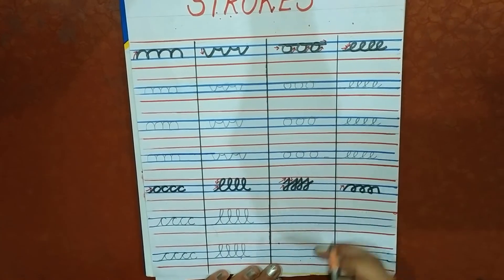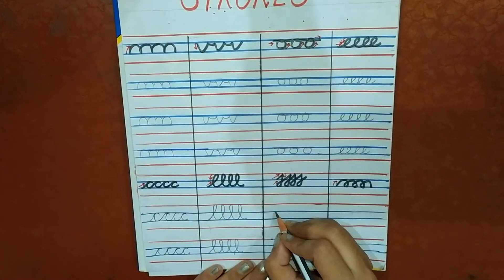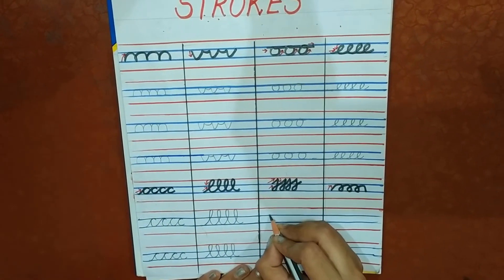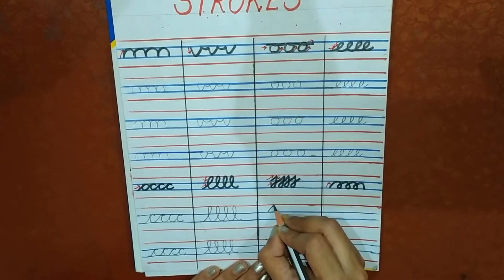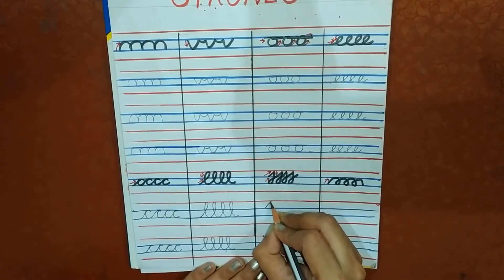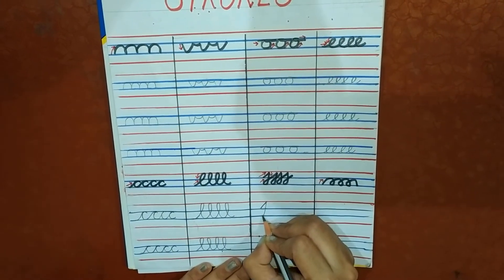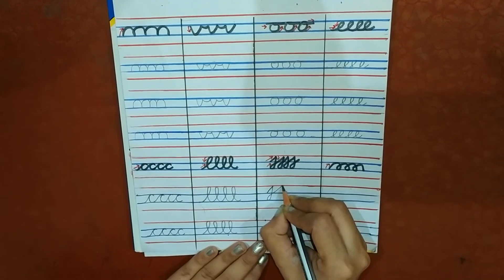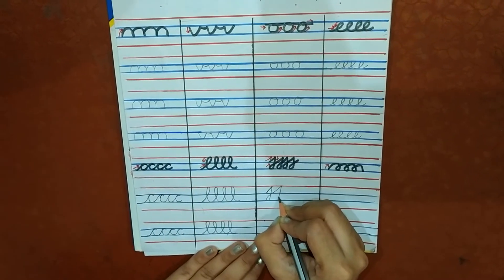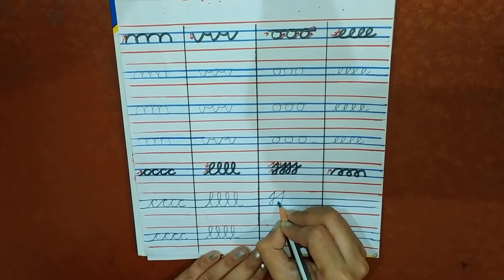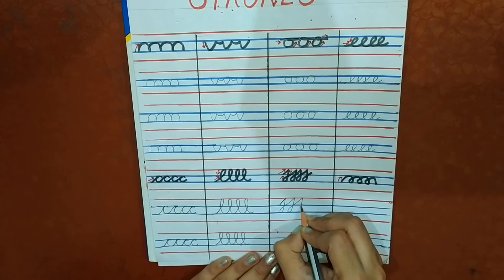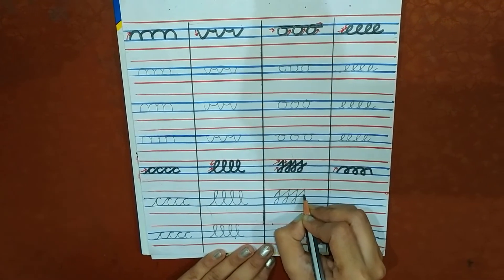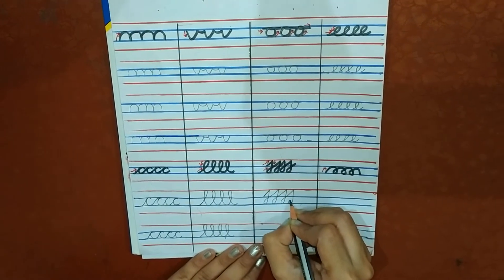Now, this is a little different — cursive J. You have to start from the second line. First of all, you have to go up and touch the red line, then come back, touch the blue line. Go up again, touch the red line, come back. Then go up, come back, then circle. Go up, come back, then circle.